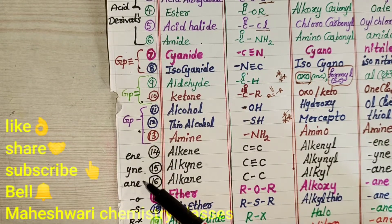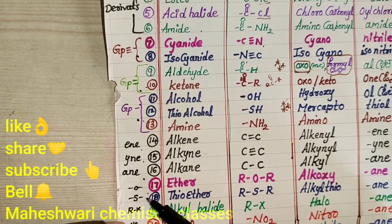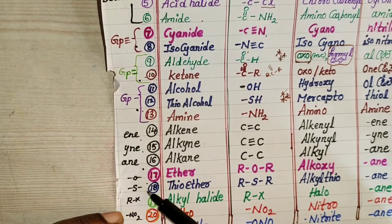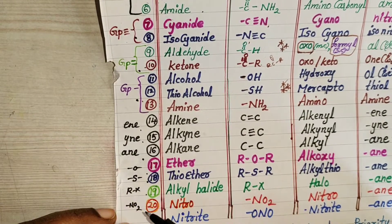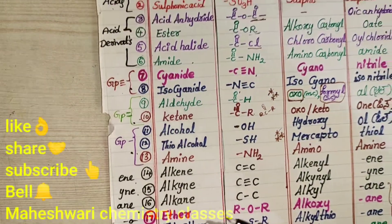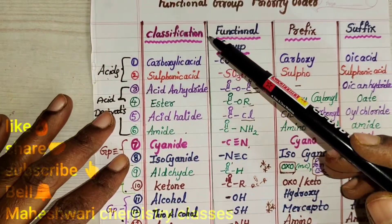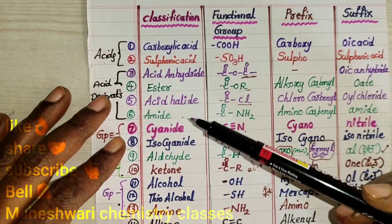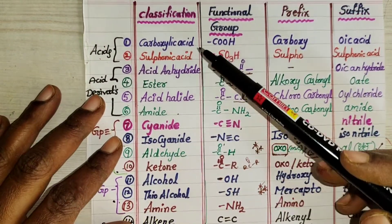Then: ene, yne, ane, ether, thioether, alkyl halide, and nitro groups. From top to bottom here, priority decreases.